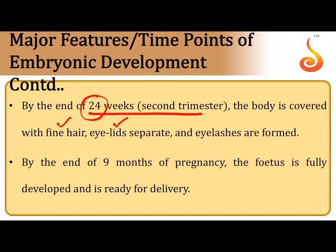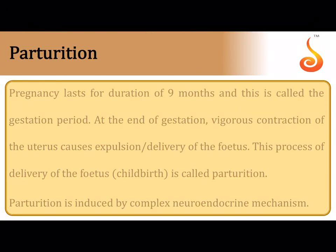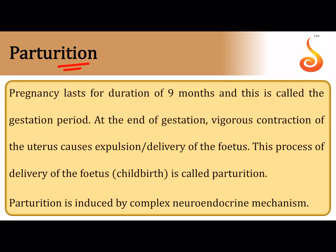By the end of nine months the fetus is fully mature and ready for delivery. The process of delivery is referred to as parturition. Parturition happens at the end of the gestation period. The most important stimulus for parturition is the fully formed fetus and the mature placenta, which induce mild uterine contractions that later become vigorous — this is called the fetal ejection reflex. As the uterus contracts, the mother's posterior pituitary releases a hormone called oxytocin.